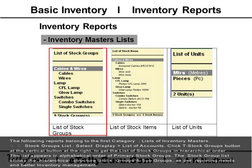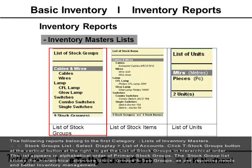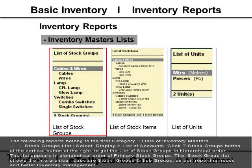The list appears in alphabetical order of primary stock groups. The stock group list shows the hierarchical structure of stock groups and subgroups as per reporting needs and better inventory management.